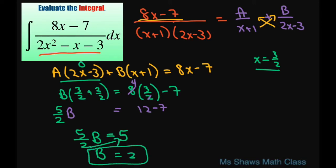Now to eliminate B, we're going to let x equal negative 1. So this is going to go to 0, and we're going to have A times 2 times negative 1 minus 3 equals 8 times negative 1 minus 7. Alright, this is going to be negative 8 minus 7, so this is negative 15. This piece here is going to be negative 2 minus 3 is negative 5A, so A equals 3.